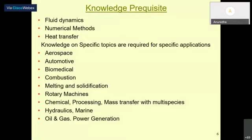99% of engineering requirement is only to use the software effectively. One to two percent who are at the research level do the deeper development work. Most industrial requirements are met by software developed by many intelligent brains during the last three decades. Present engineers should know how to make use of that knowledge for design requirements. Book knowledge alone is not sufficient; you need to know how to solve problems using this software and what kind of problems it can solve.